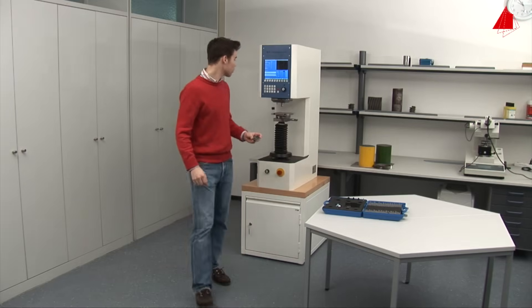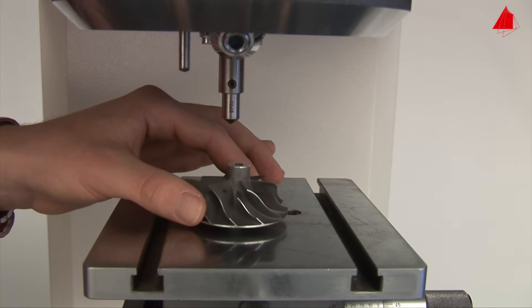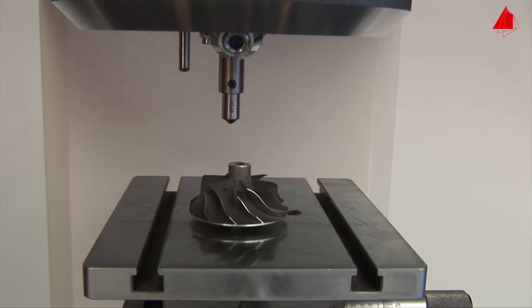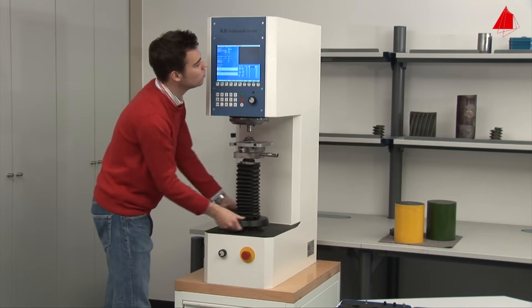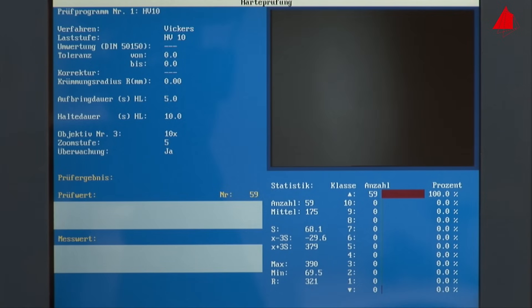He then places the compressor wheel on the support table and rotates the microscope lens into its working position. With a hand wheel, he adjusts the height of the support table until the test piece surface is displayed in focus on the screen.